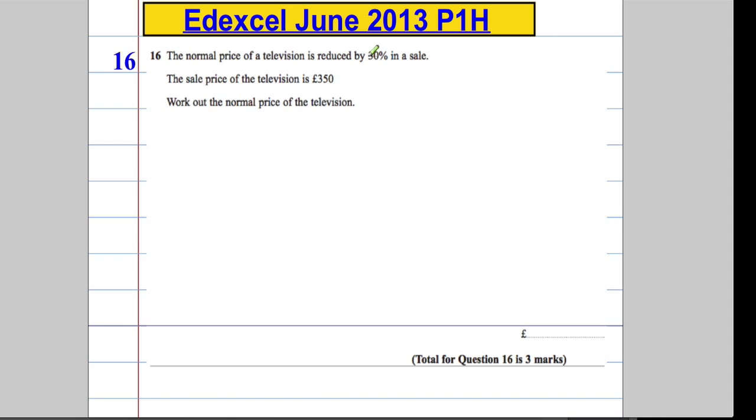The normal price of a television is reduced by 30% in a sale. The sale price of the television is £350. Work out the normal price. Now typically here, students often try and work out 30% and then reduce this price by 30%. They're not going to give you a question that easy this late in the paper for that many marks, so you've got to use a little bit of common sense and stop yourself from doing things such as that.